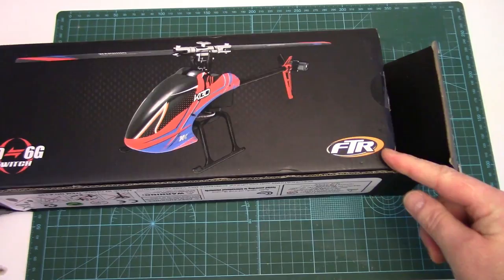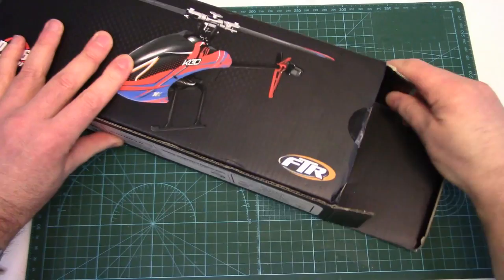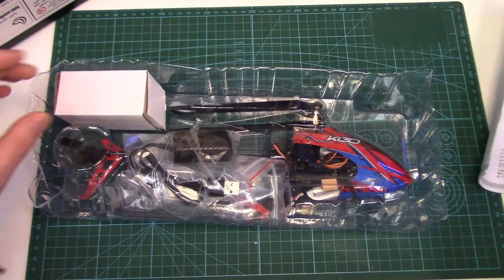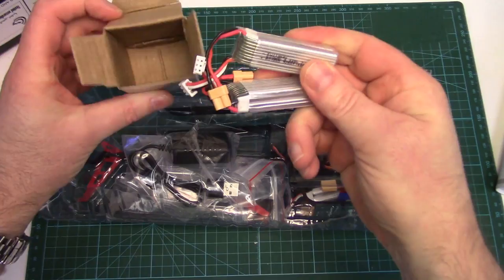Now this is the FTR version, so Futaba transmitter ready. I'm going to be binding it to my FR Sky Horus radio. Let's open this up. There we go. So instructions, who needs those? What do we have here?